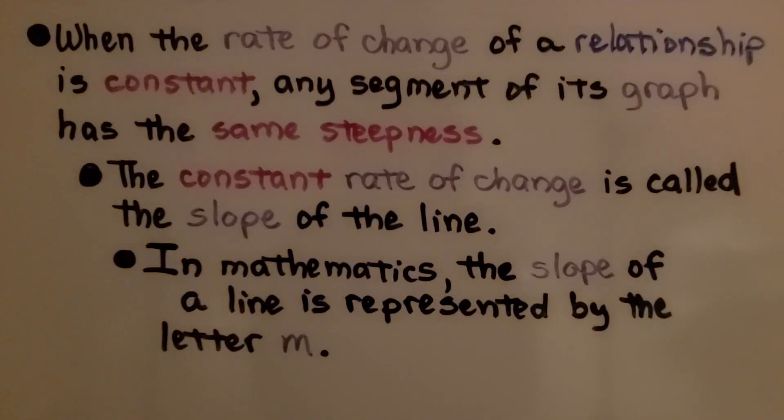When the rate of change of a relationship is constant, any segment of its graph has the same steepness. The constant rate of change is called the slope of the line. In mathematics, the slope of the line is represented by the letter m.